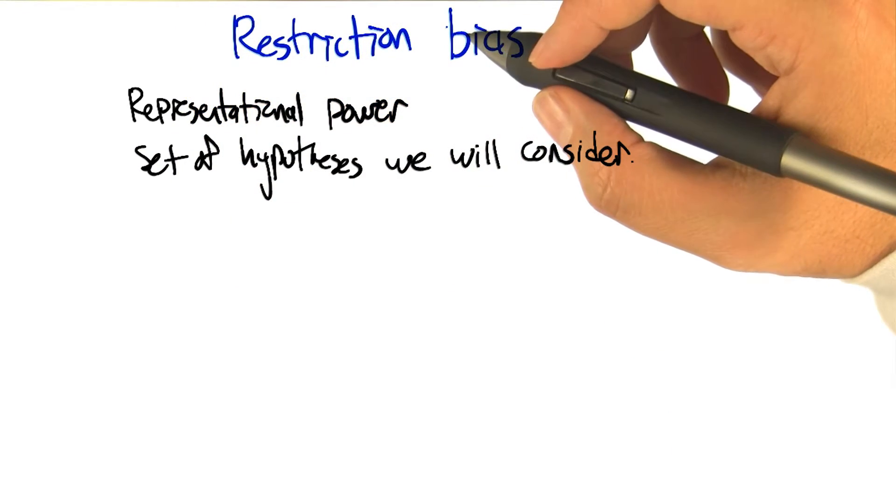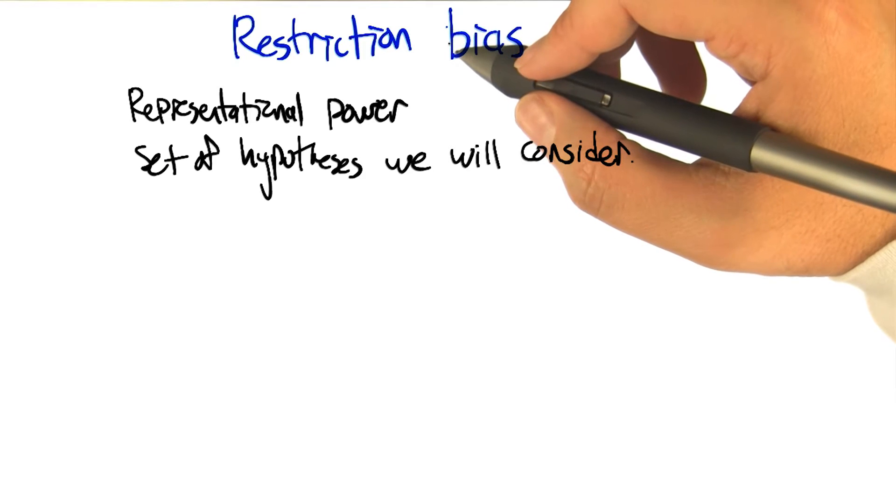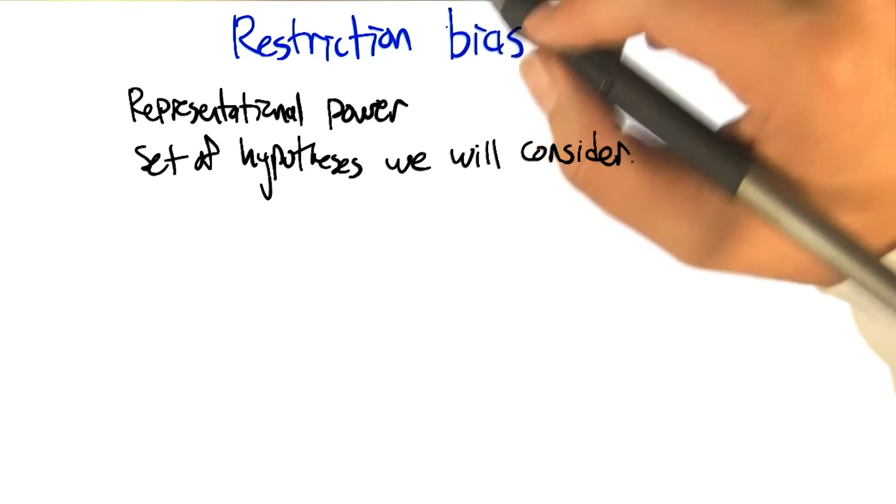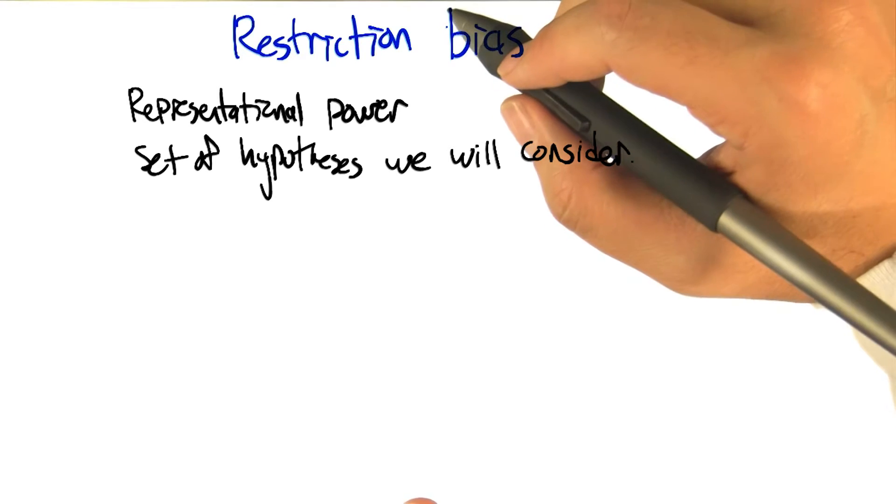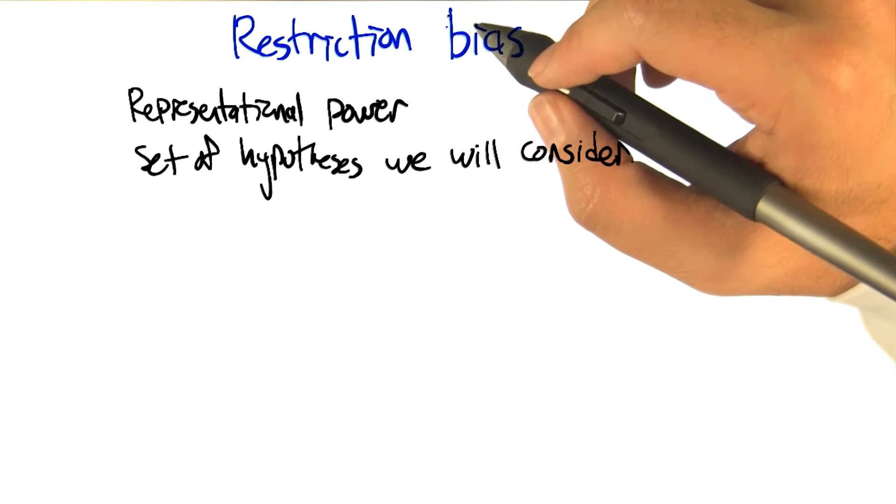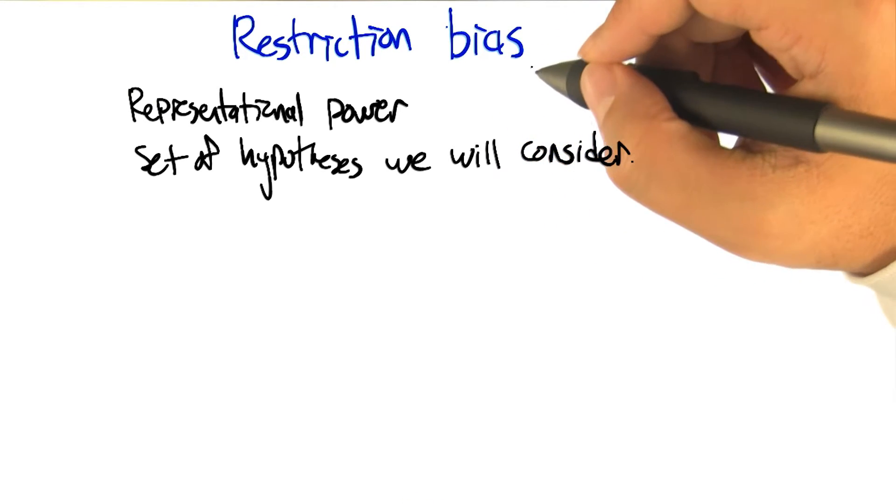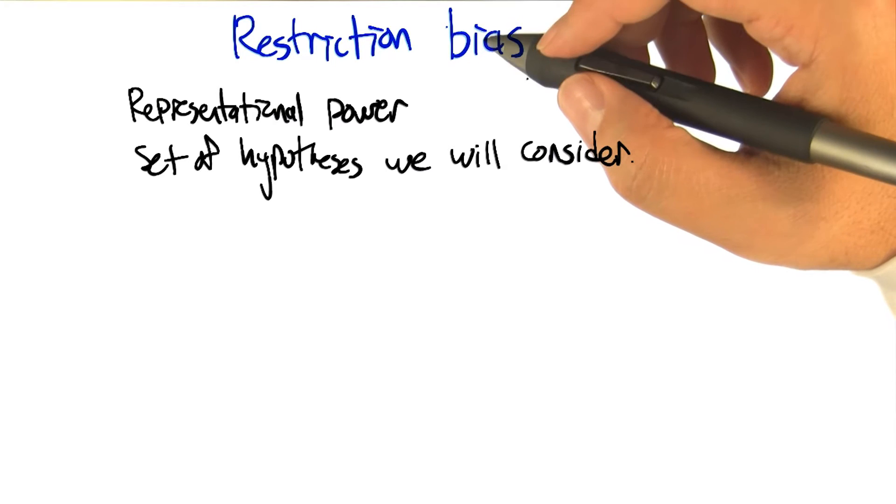Right, so if there's a great deal of restriction, then there's lots of different kinds of models that we're just not even considering. We're restricting our view to just a subset of those. So in the case of neural nets, what restrictions are we putting?